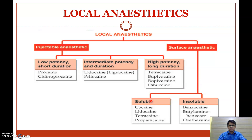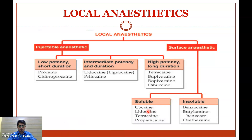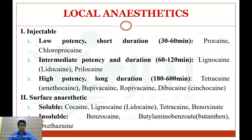Surface anesthetics are divided into soluble and insoluble. Soluble examples include cocaine, lignocaine, tetracaine, and proparacaine. Insoluble surface anesthetic examples are benzocaine, butyl aminobenzoate, and oxybuprocaine. Duration ranges: high potency 180–600 minutes, intermediate potency 60–120 minutes, and low potency 30–60 minutes.